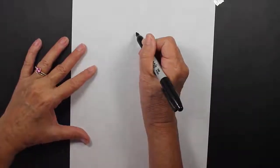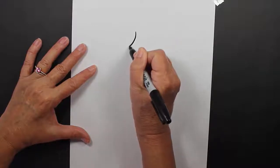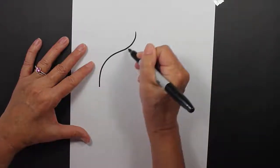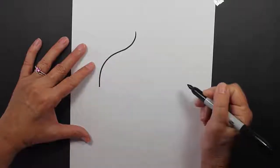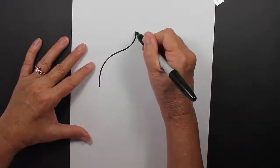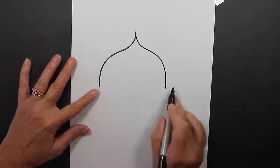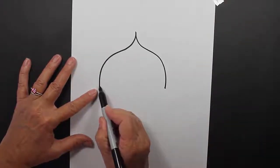The first thing you'll want to do is make a curved line that looks like this. It's almost like a backwards letter S that's really stretched out. Then we're going to make the same kind of line on the other side, just like that. Now we're going to connect these two lines with a curved line.